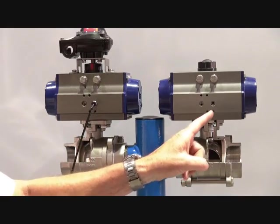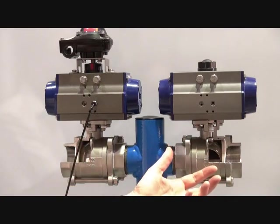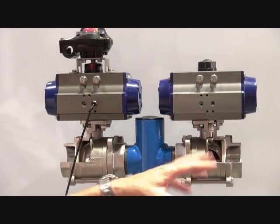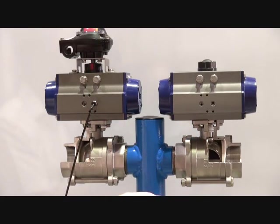Double acting means that we can put air on one side, the unit will rotate in one direction, air on the other side, and the unit will rotate back again. Remove the air, and the actuator stays in that position.